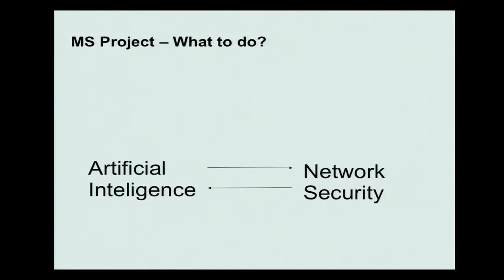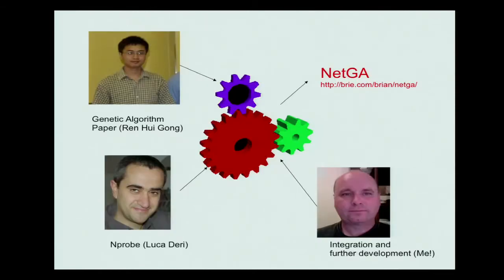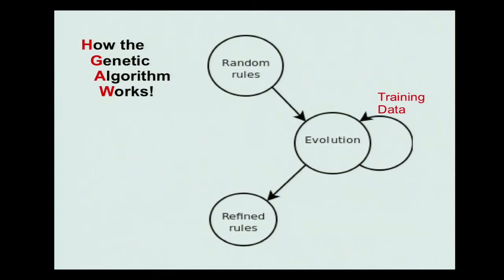I was taking an artificial intelligence class at the same time while studying network security, and I did some research and found some papers. One of the papers was an implementation using AI or genetic algorithms written by Ren Hui Gong. So I made a proposal and submitted it to my professor to do the same implementation, do the coding, and originally integrate into Snort. I ended up actually integrating into nProbe.